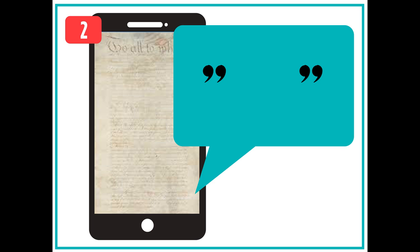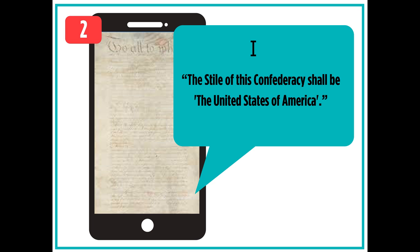When users click on the second button, they can read quotes from the articles so they can read the articles that each state agreed upon. The first article states: "The style of this confederacy shall be the United States of America." This means that the nation will be called the United States of America.